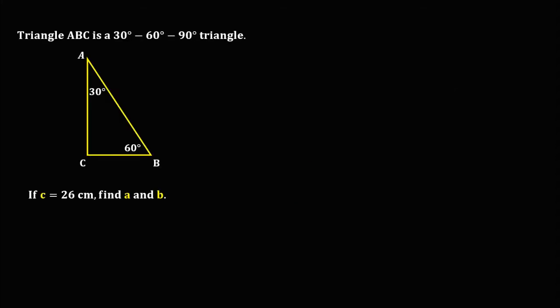So we have this given: triangle ABC is a 30-60-90 degree triangle. Side C is 26 cm. Find side A and side B.